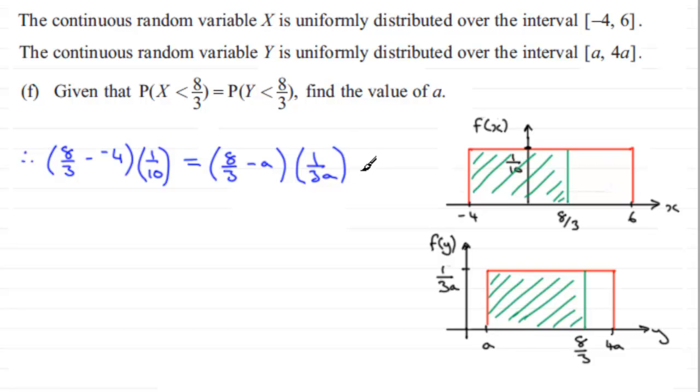So it's just a question of solving this equation. There are many ways I'm sure we can do this, but if we work out 8 thirds minus minus 4 and multiply it by a tenth, that's going to give us two thirds. So we've got two thirds here.